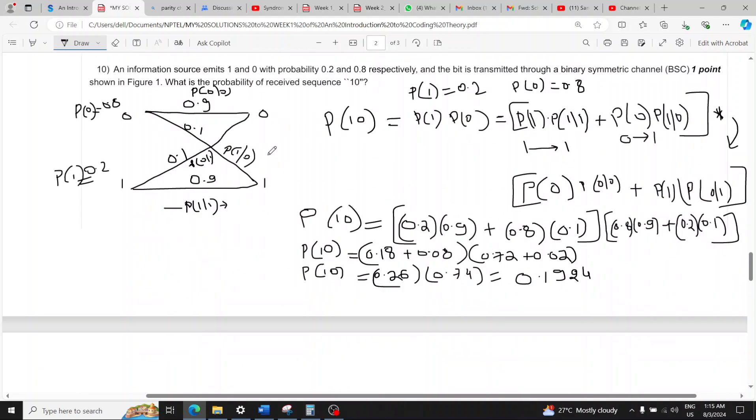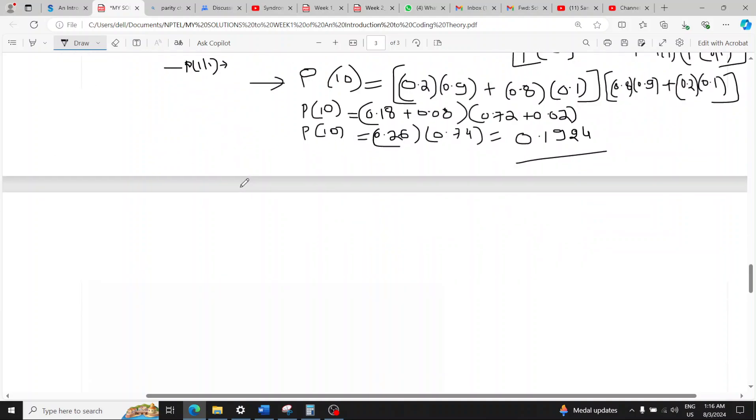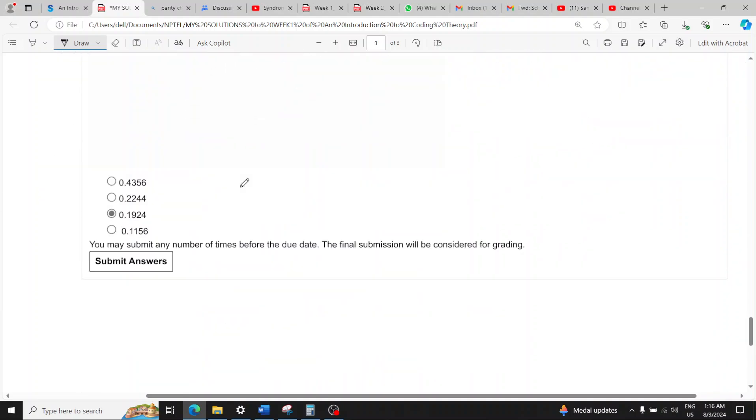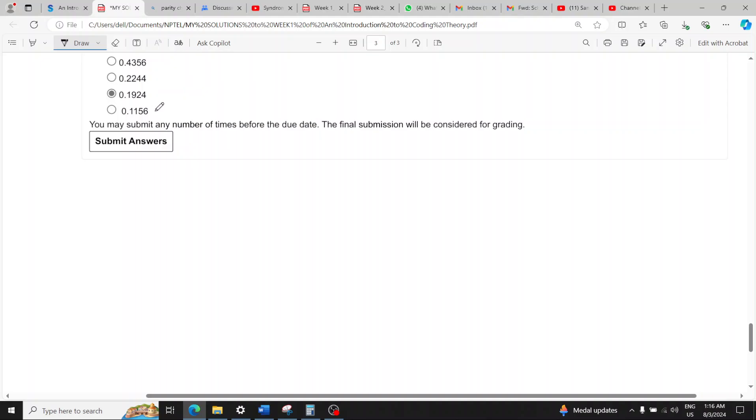And in question ten you have to find what is the probability of receiving a sequence one zero. To receive a sequence one zero you will find the probability of one and zero according to the diagram. Receiving a zero is this into this and this into this which is written like this. So this equation solves to this. So the answer for question ten is option C which is 0.1924.